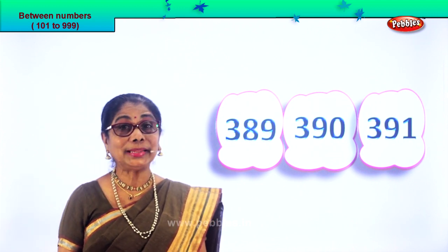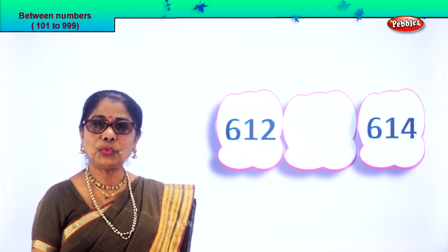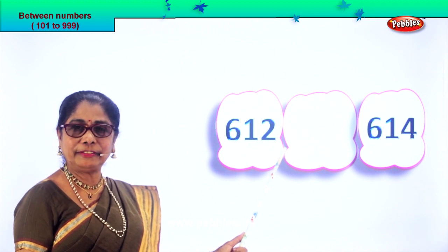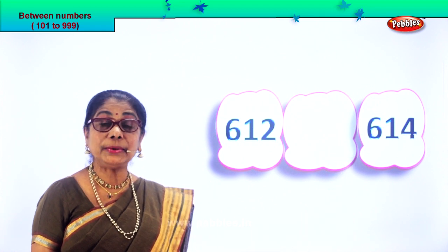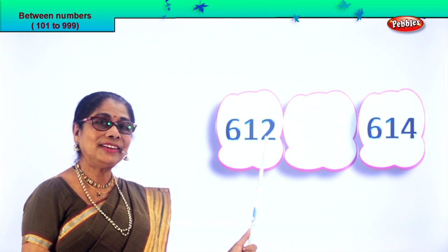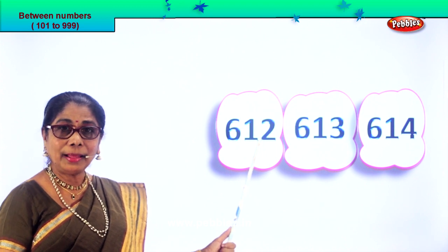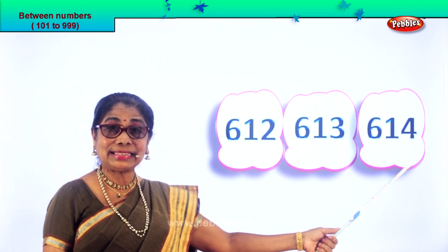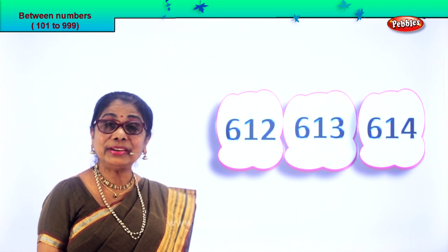Let's get on to another set of numbers. Here we are. Read the number: 612 and 614. After 2 comes 3, after 12 comes 13. So 612, the number that follows will be 613, then 614. The middle number is 613.